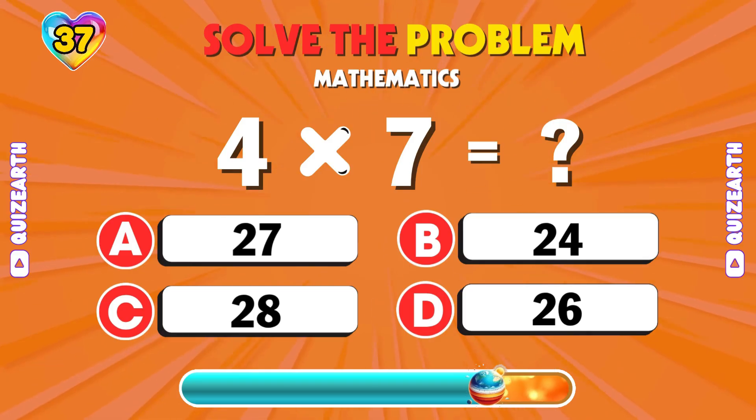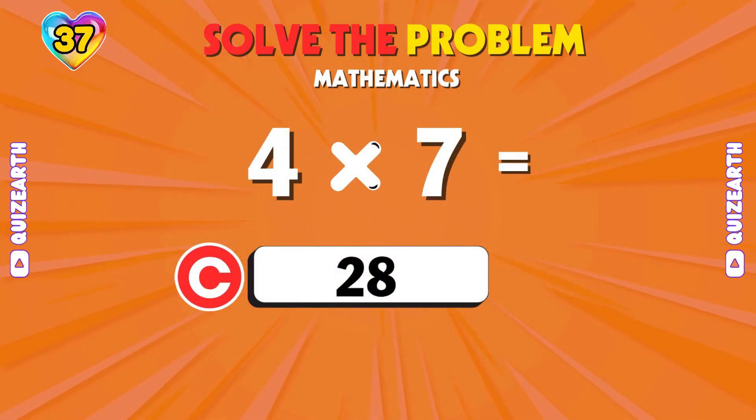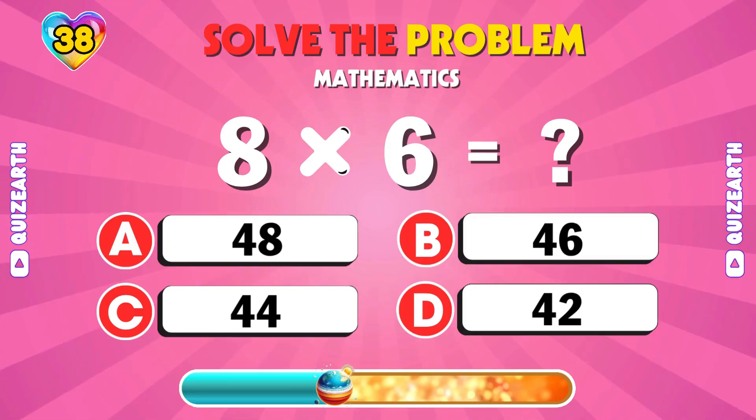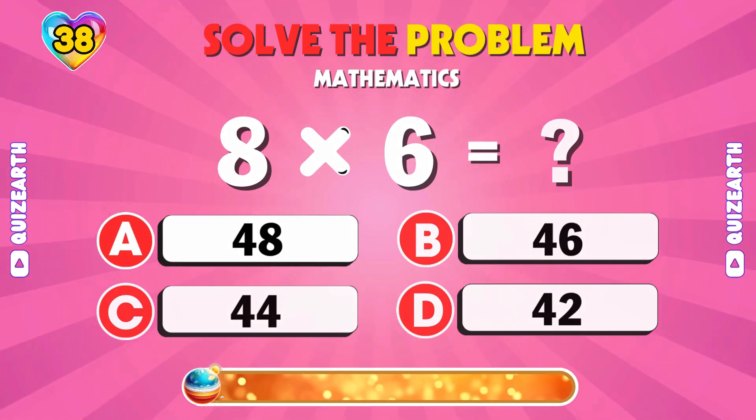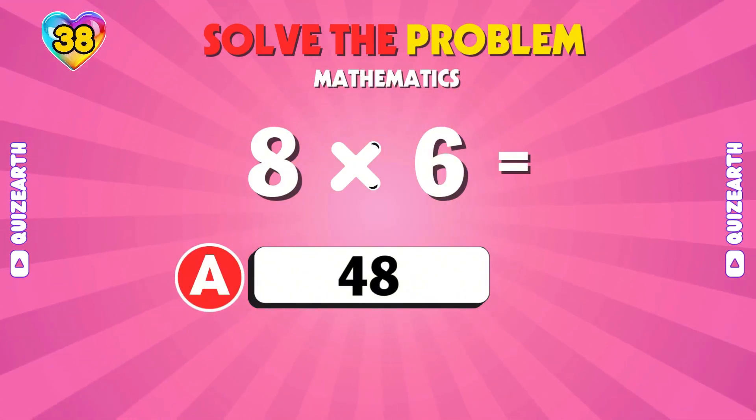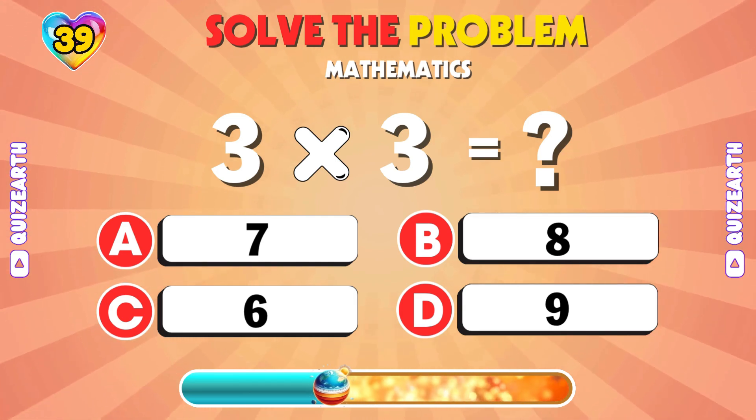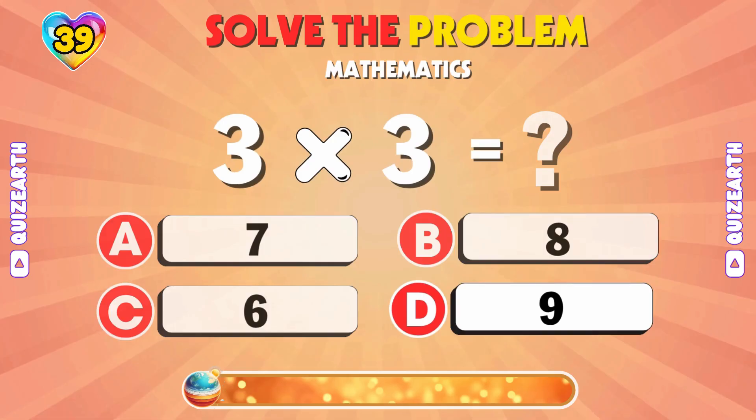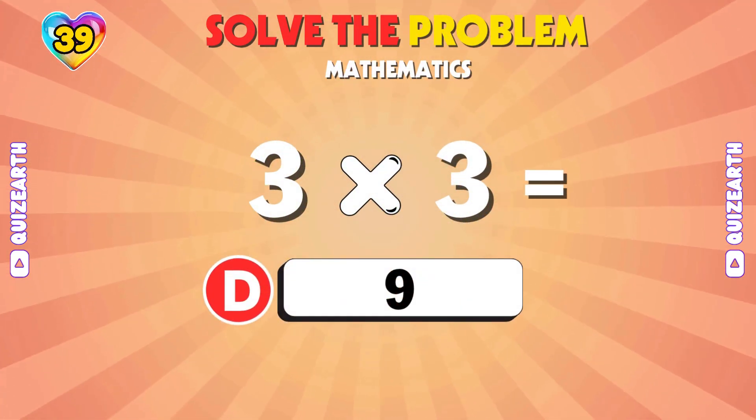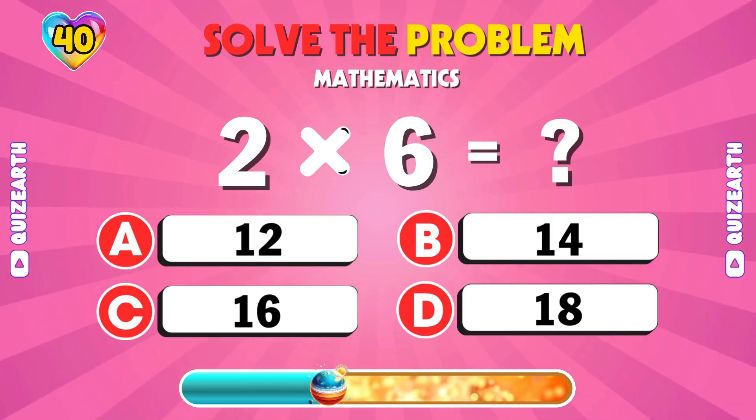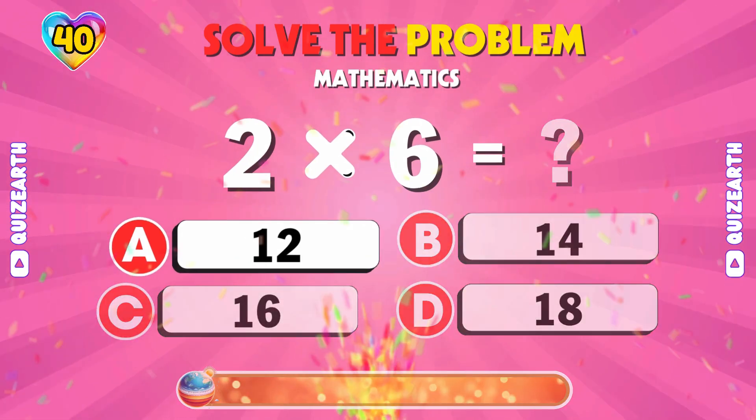Up next, 4 times 7. It's 28. What do you get with 8 times 6? 48. Solve this, 3 times 3. You got it, 9. 2 times 6? 12.